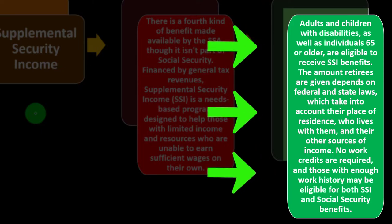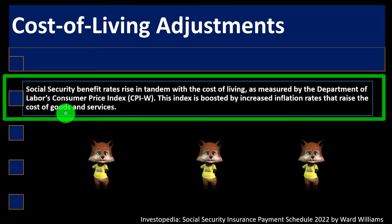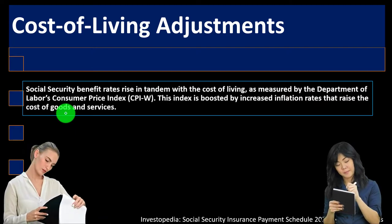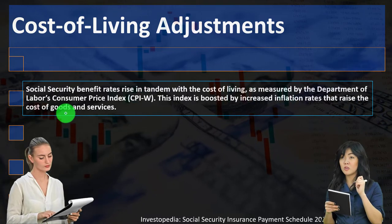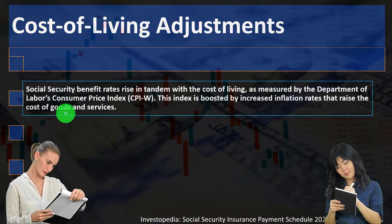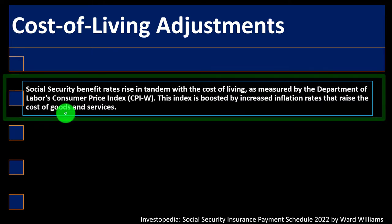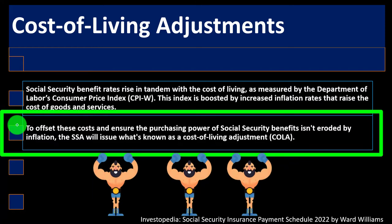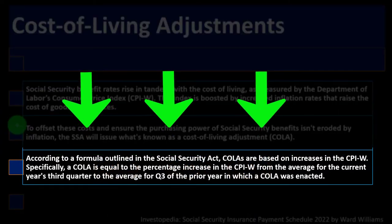Social Security benefit rates rise in tandem with the cost of living, as measured by the Department of Labor's Consumer Price Index — the CPI-W. Since there's inflation, the purchasing power of the dollar goes down, so they must adjust the payment amount periodically. To offset these costs and ensure purchasing power isn't eroded by inflation, the SSA issues what's known as a Cost of Living Adjustment — COLA — according to a formula outlined in the Social Security Act.